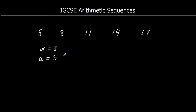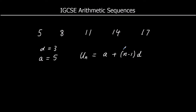We're going to go through two formulas in this video. The first is for the nth term: uₙ = a + (n−1)d. So the nth term — say the fifth term — is the first term plus four lots of the common difference. In this example, the fifth term is 5 + 4 × 3, which gives us 17. So there's our first formula.